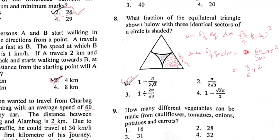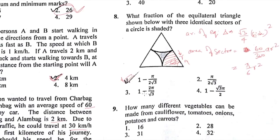This one, I was not able to solve. How many different vegetables can be made with cauliflower, tomatoes, onions, potatoes, and carrots? I thought this could be done with permutation and combination. I will definitely solve this question and answer you. If you know the answer to this ninth question, let me know in the comment section.